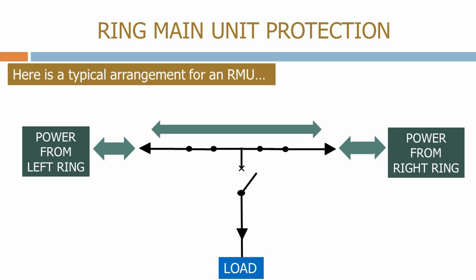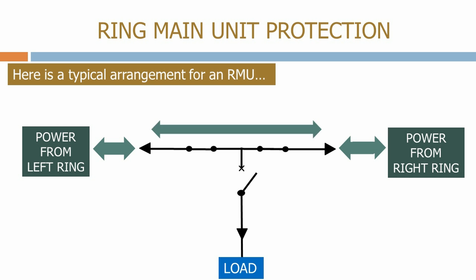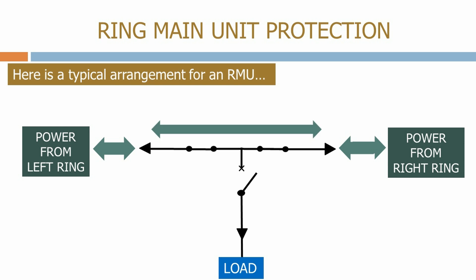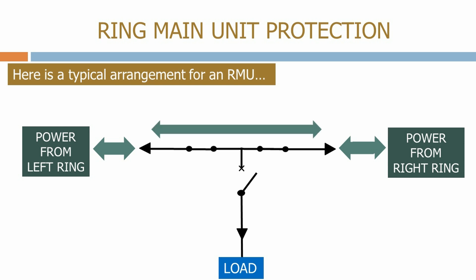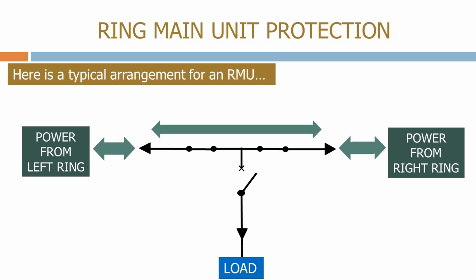This operation will only be done when one or both sides of the ring are dead, and is therefore only put into practice under the supervision of the network controller who will ensure that this is the case. This flexibility shows why ring main units are used throughout the distribution network.